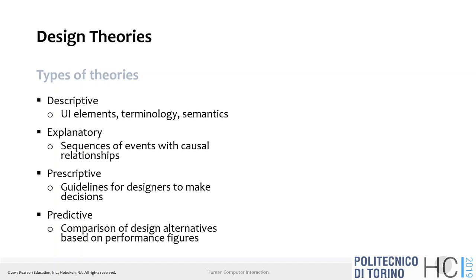One of the most famous predictive theories is Fitts' Law: the time for selecting an element is proportional to the distance to it and inversely proportional to its area. Something near and large is easier to select than something far and small. This is why in forms you fill information and the OK or Save button is at the bottom — close to the last field you entered, not at the top.